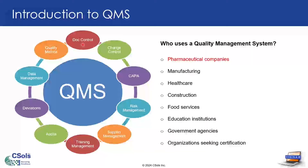First, we have DocControl. DocControl is used to manage the creation, review, approval and distribution, and also the revision of all documents related to quality management. Next, we have ChangeControl. This module is used to manage the change of any process, procedure, and also documentation related to quality management. Next, we have CAPA, or Corrective and Preventive Action module. This one will be primarily used to identify, investigate, and resolve issues related to quality, and also used to prevent future occurrences.